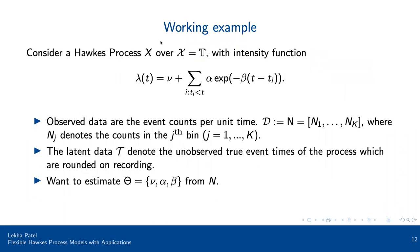Here's a working example considering the state space over time. A general intensity function popular in many frameworks has a constant background rate mu and an exponential decay for the excitation kernel. The quantities of interest are estimating mu, alpha, and beta. Our observed data are the event counts per time step — a vector of counts in each bin. If we knew the timestamps, the latent data T, we could use maximum likelihood to find mu, alpha, and beta. But here we only see our count vector, so we want to estimate theta — that's mu, alpha, beta — from N.